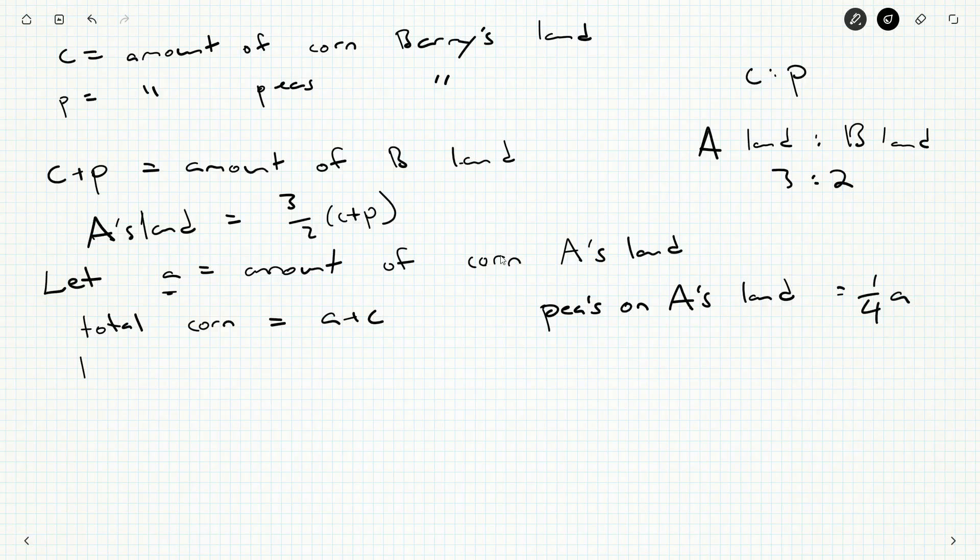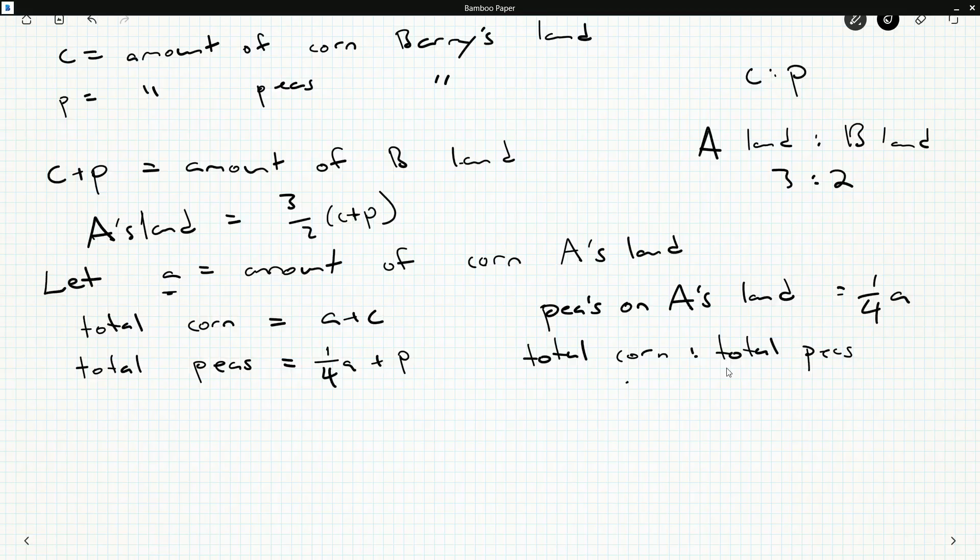And this gives me an equation for the total amount of peas. That's going to be the amount coming from Angela's land plus the amount of peas coming from Barry's land. And I know the ratio for these two. So total corn to total peas, it was something involving a seven, wasn't it? Seven to three.